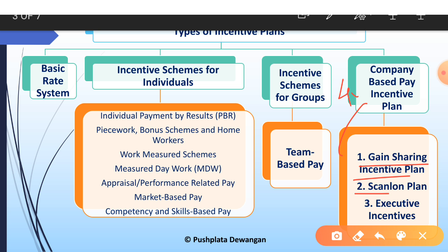Next is the Scanlon plan, a formula which measures labor cost as a proportion of total sales and sets the standard ratio which will trigger the distribution of savings to a pre-established formula. The third sub-type is executive incentives. Organizations offer heavy incentives to executives to retain talented workforce, as immense competition in the market has forced organizations to offer competitive packages. Performance based incentives are the only solution for the demand-supply disparity, making executive incentives more effective in the market segment.